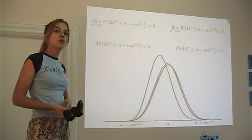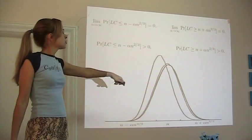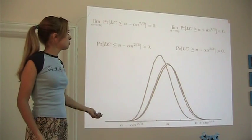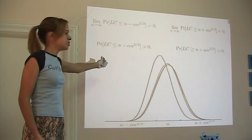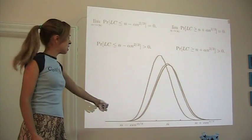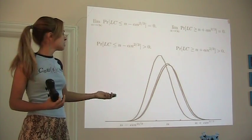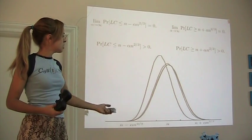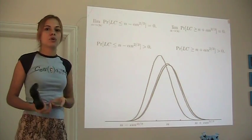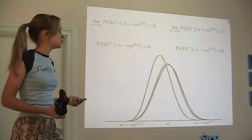This n to the 2/3 scale is the interesting critical window, and to establish it we need four bounds — upper and lower bounds on either side. To show the window is not bigger than n to the 2/3, we need upper bounds showing that the probability of being far outside this window goes to zero as alpha goes to infinity. To show the window is not smaller, we need lower bounds showing that as n goes to infinity there is a positive probability — not zero — that the last crash is at, say, n plus 100 times n to the 2/3.